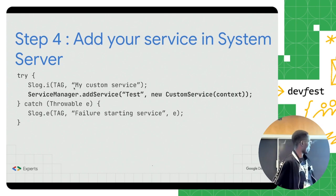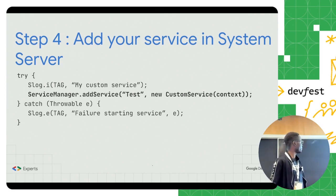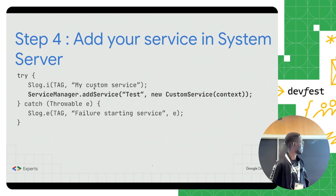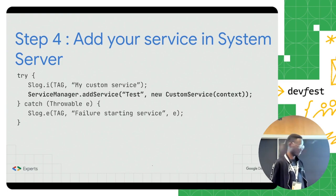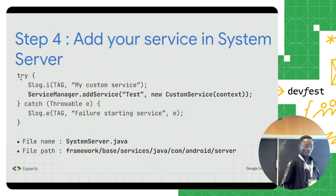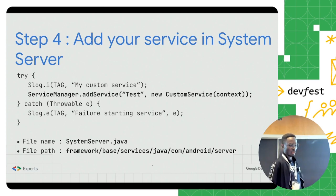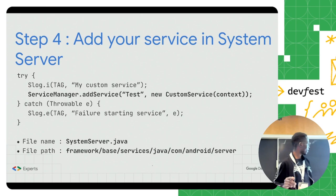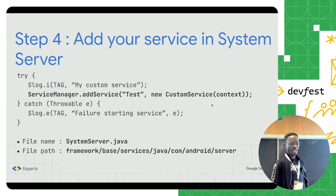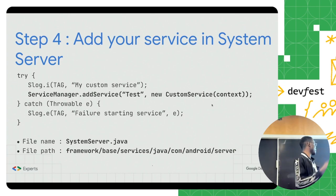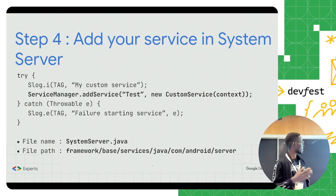After that, we need to register our custom service with the service manager. The user will then be able to utilize this service from the application. It's important to use a try-catch here because it can fail. We do this inside the SystemServer file, which is an existing file found at framework/base/services/java/com/android/server. We create an instance of our custom service class — the one that implements the stub generated from our IDL — and register it with the service manager.